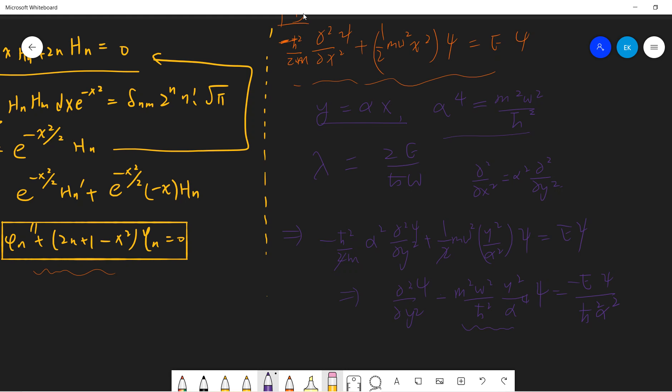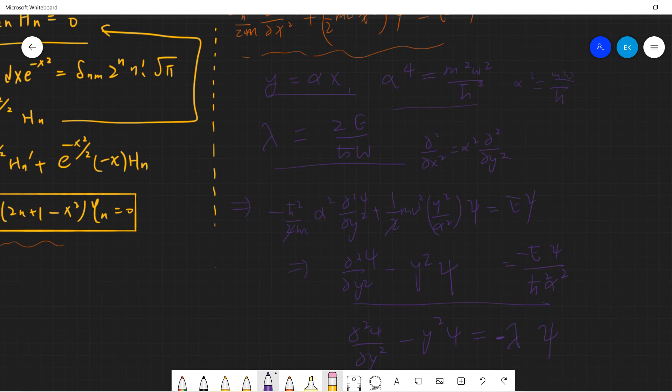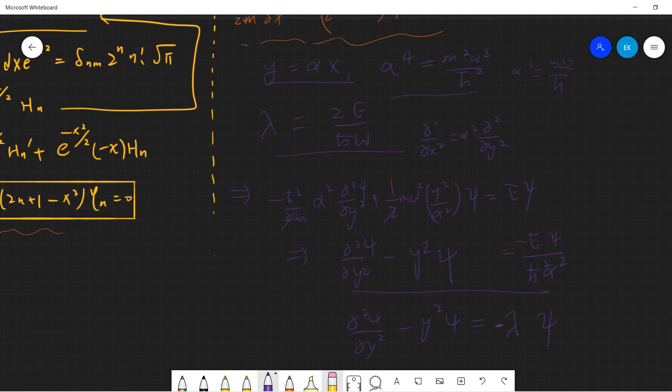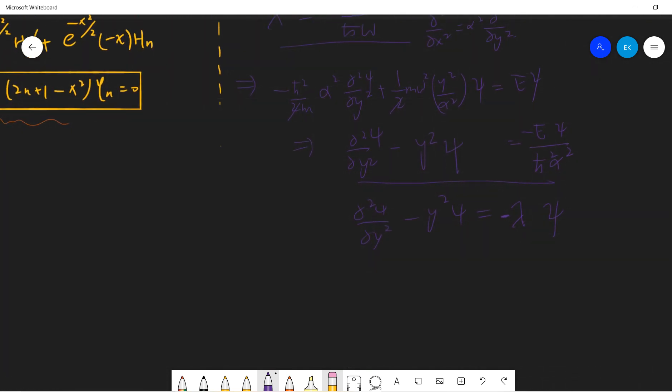So this one, I define alpha to the fourth to be this. So then this one will be 0, that will be 1. So this is y squared psi. And for this one, I define this. So I plug alpha squared. Alpha squared is m omega h bar. So put in all of this, and this gives us that the lambda, lambda psi, minus lambda psi. Is it correct? I think it's correct, yes, it's correct.